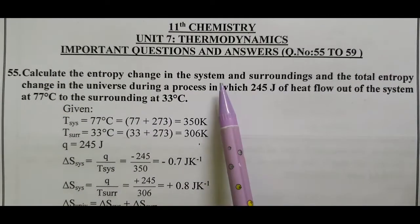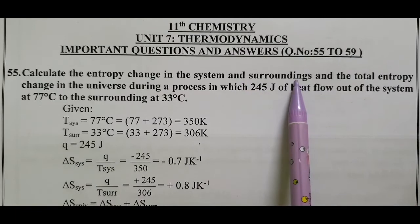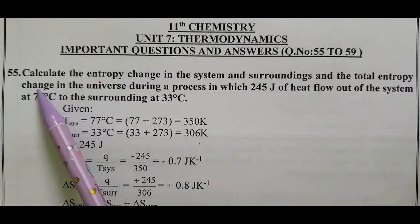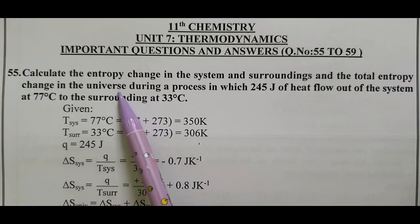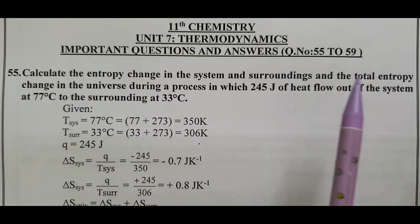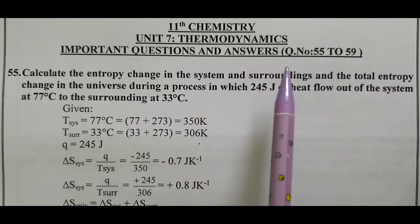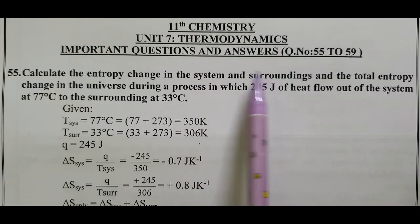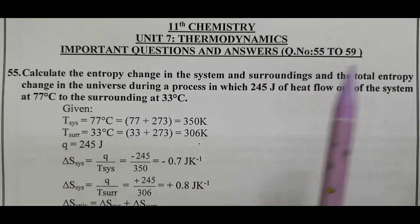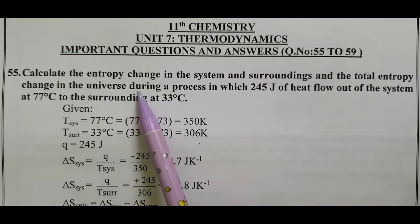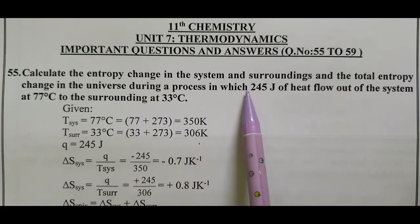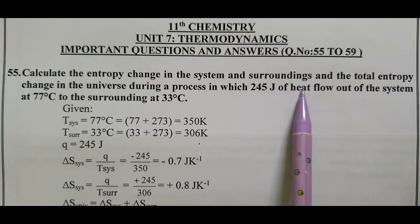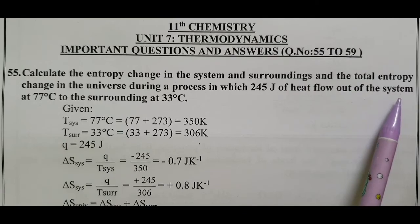Question number 55: Calculate the entropy change in the system and surroundings and the total entropy change in the universe. Formula: delta S universe equals delta S system plus delta S surrounding. We calculate each separately and add them for total entropy. During a process in which 245 joules of heat flow out of the system.